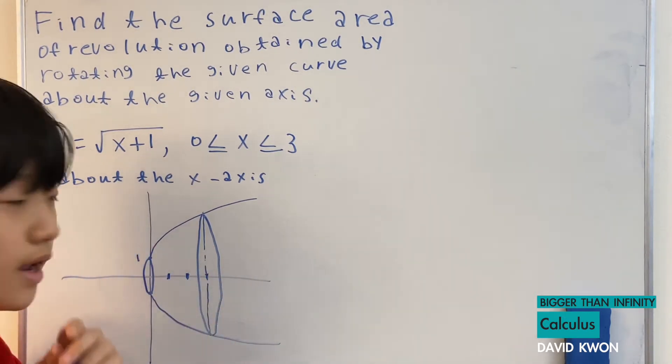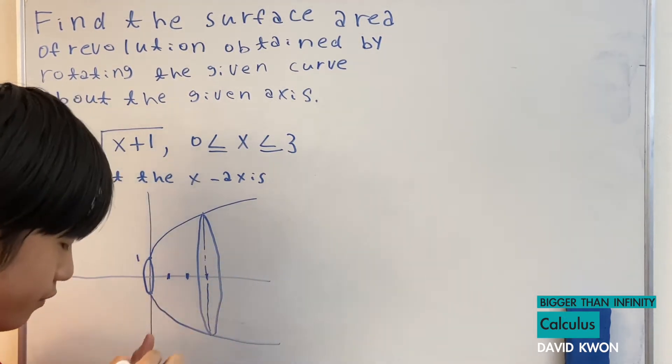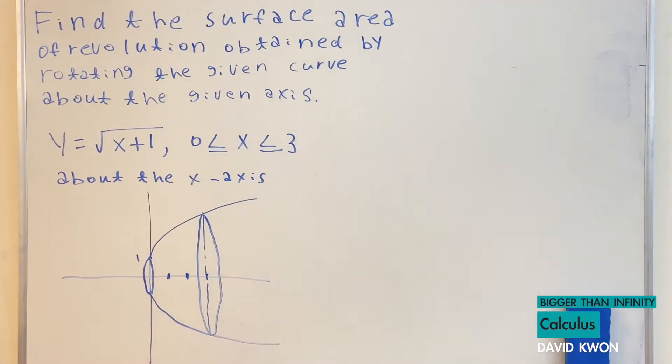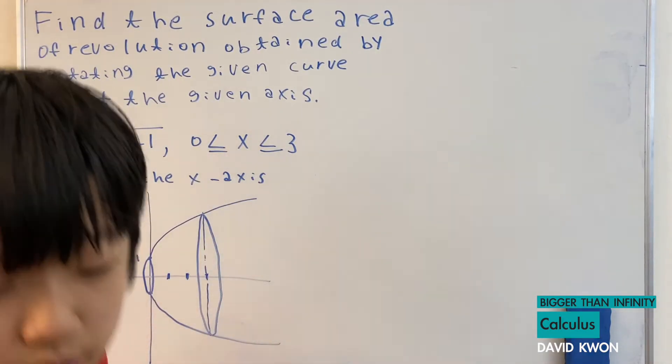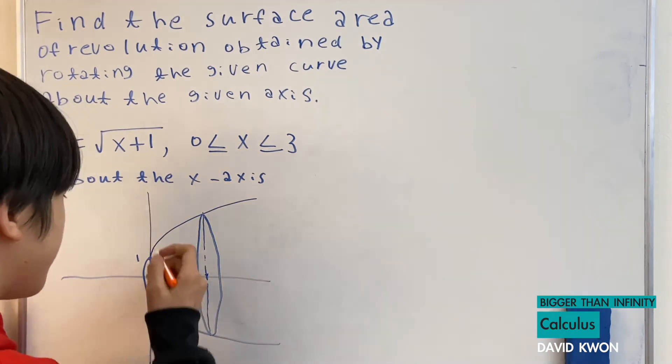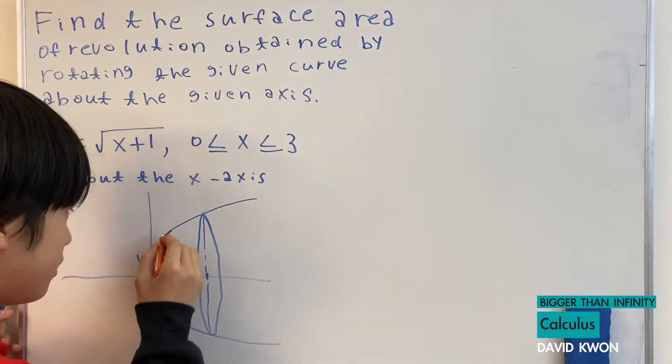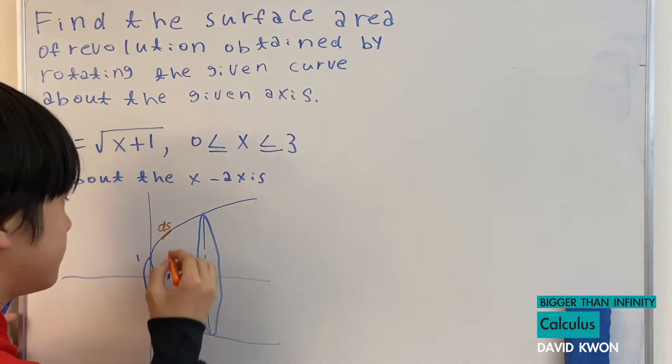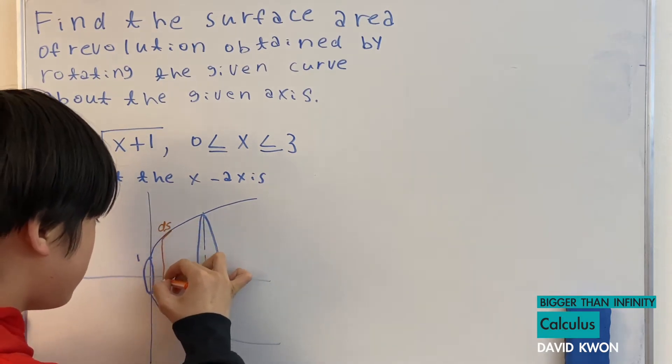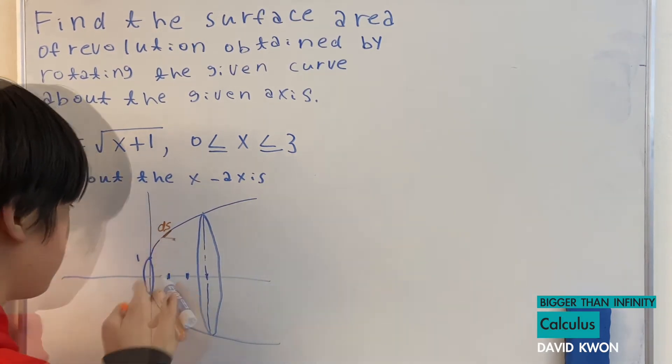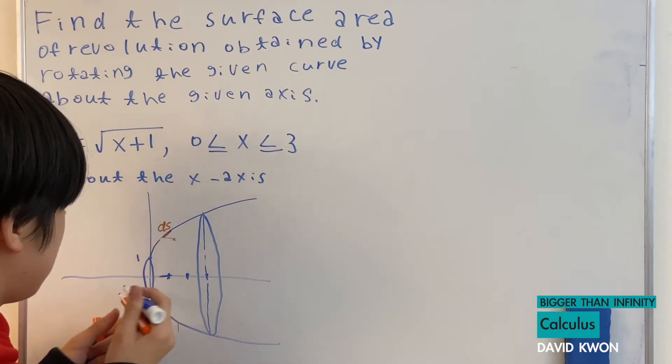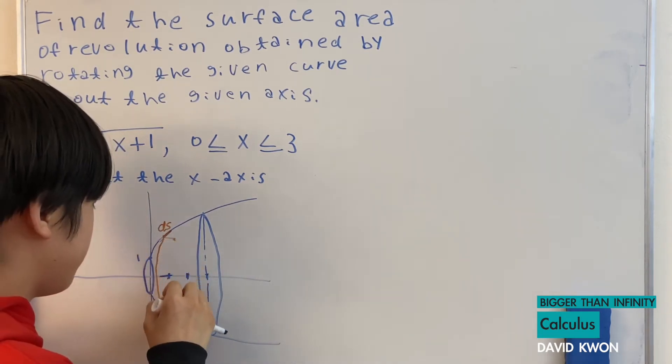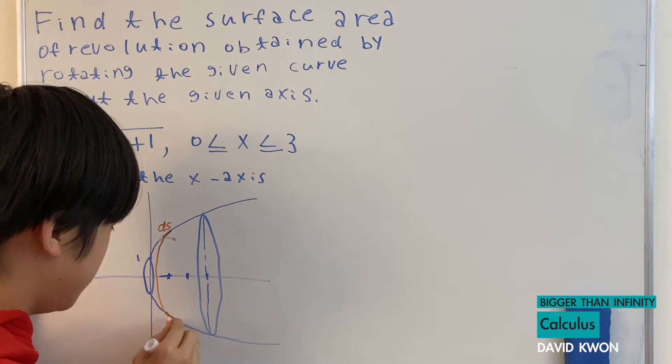So to do that, I will draw a demo for you. So we got this orange pen. So if we call this side, ds, this length. And this is also ds.